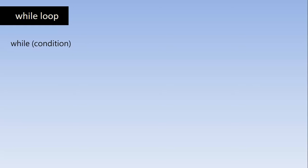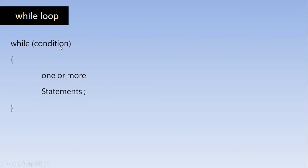The while loop looks similar to the if condition — first we write 'while' and then the condition. So: while, inside the bracket the condition, followed by a pair of curly braces where you have the executable statements. First the condition is checked, then execution starts. After the compiler finishes execution, it goes back to the condition and checks again; if the condition evaluates to true, the block is executed one more time.